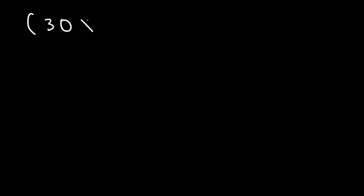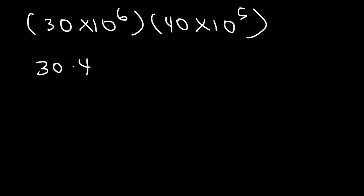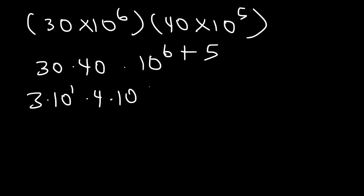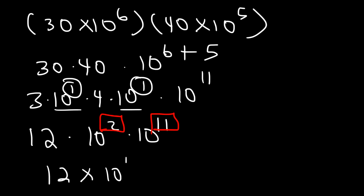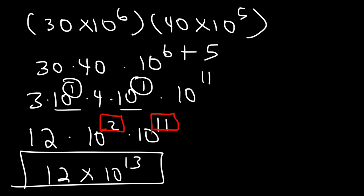Go ahead and multiply 30 times 10 to the 6 by 40 times 10 to the 5. This is going to be 30 times 40, then 10 to the 6 plus 5. Now 30 is 3 times 10 and 40 is 4 times 10, and 6 plus 5 is 11. 3 times 4 is 12, and 10 times 10 is 100, or 10 to the 2nd power. Adding 2 and 11 gives us 13. So the initial result is 12 times 10 to the 13.